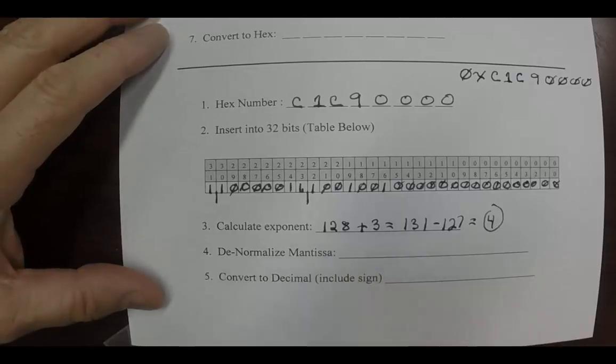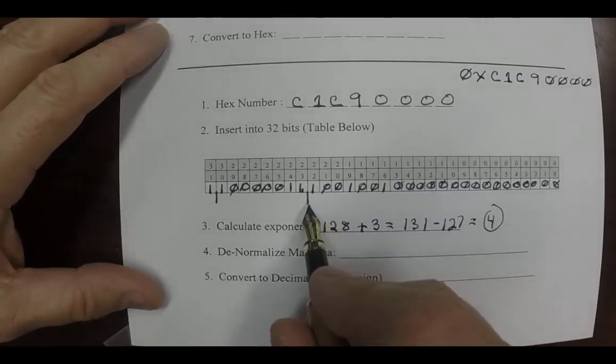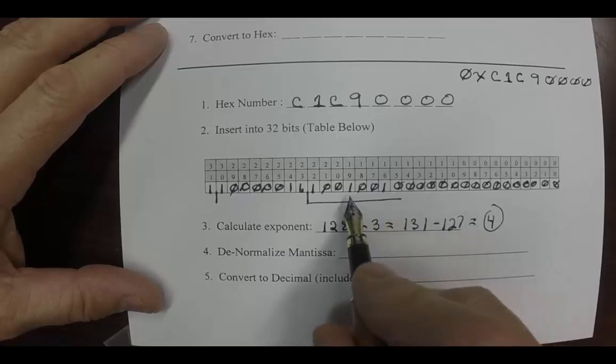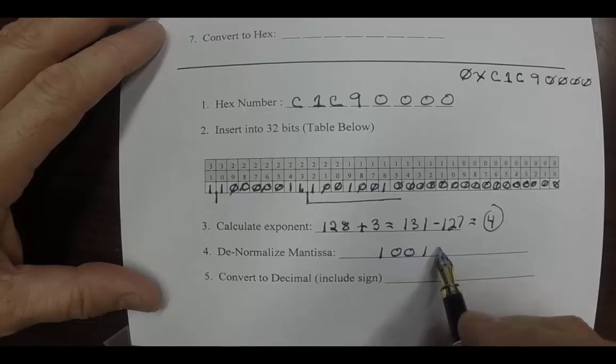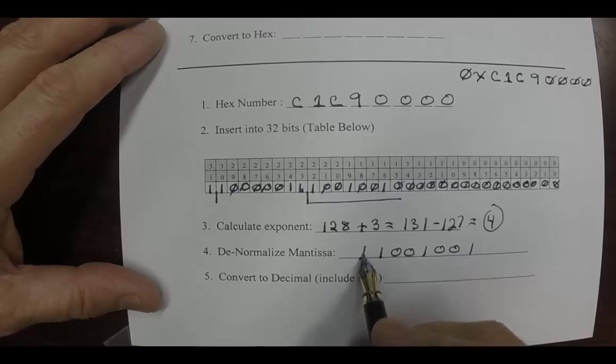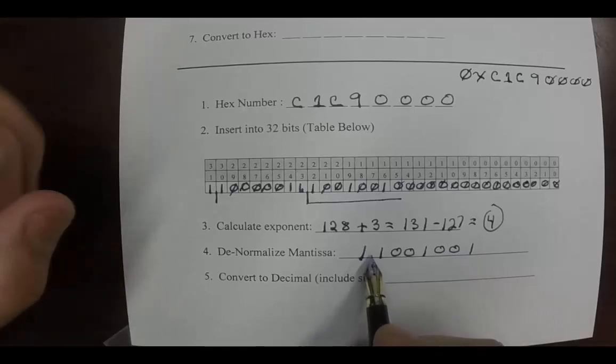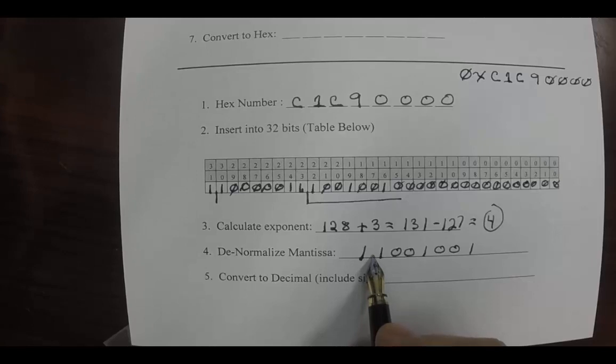Now we're going to denormalize the mantissa, which is the fraction right here, and we only take it out to as far as we see 1. So here we have 1 followed by two zeros, a 1, and then two more zeros and 1. We put a 1 in front of it. Now the decimal place unnormalized would go right here. We know we have to move it four decimal places to the right, so that's 1, 2, 3, 4 right here.